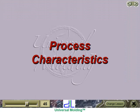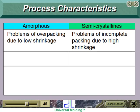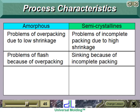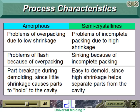Process characteristics: amorphous materials have problems of overpacking due to low shrinkage, while semicrystallines have problems of incomplete packing due to high shrinkage. Amorphous materials have problems of flash because of overpacking; semicrystallines have sinking because of incomplete packing. Amorphous materials can cause part breakage during demolding since little shrinkage causes parts to hold to the cavity, while semicrystallines are easy to demold since high shrinkage helps separate parts from the cavity.